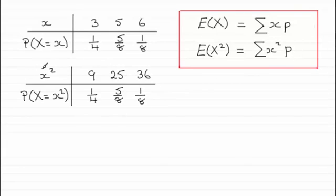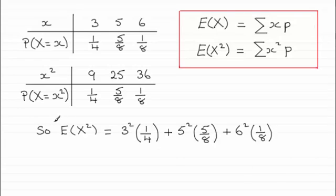Now you wouldn't necessarily want to draw up a table like this, you should just work off your original table. So the method would be something like this: we've got E of X squared equals 3 squared, in other words 9 times a quarter, plus 5 squared times five-eighths, plus 6 squared times one-eighth.